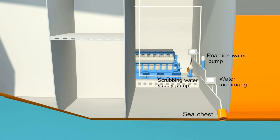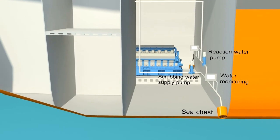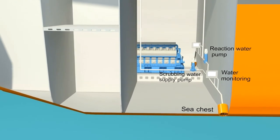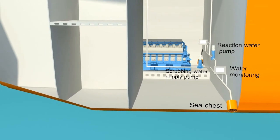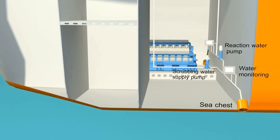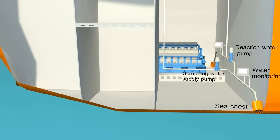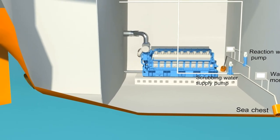The Wärtsilä open-loop exhaust gas cleaning system includes the following units: a monitoring system which controls the quality of the exhaust leaving the funnel and the discharged scrubbing water, a scrubbing water supply pump which takes seawater from the sea chest and feeds it into the scrubber.